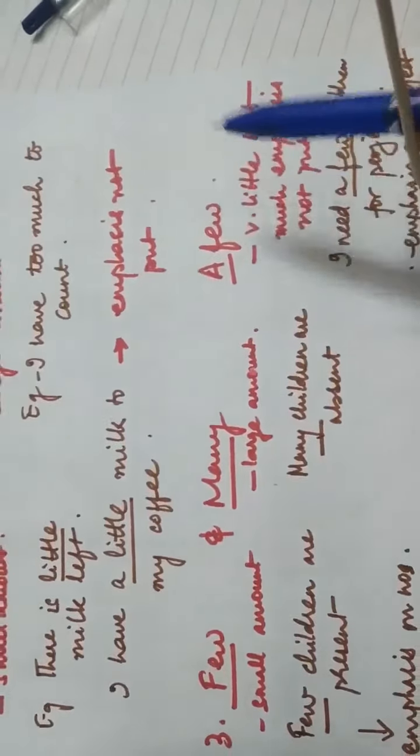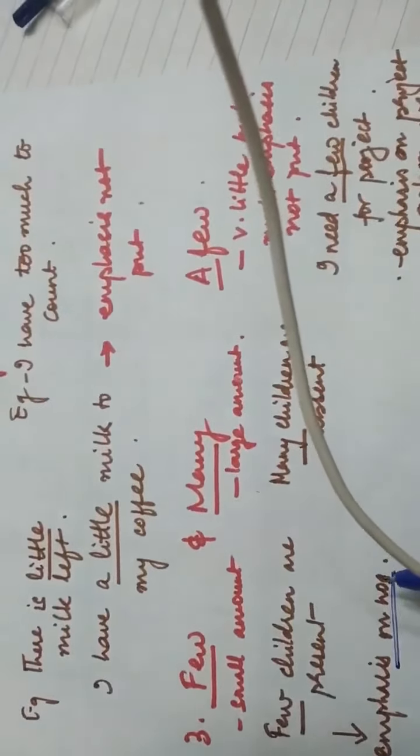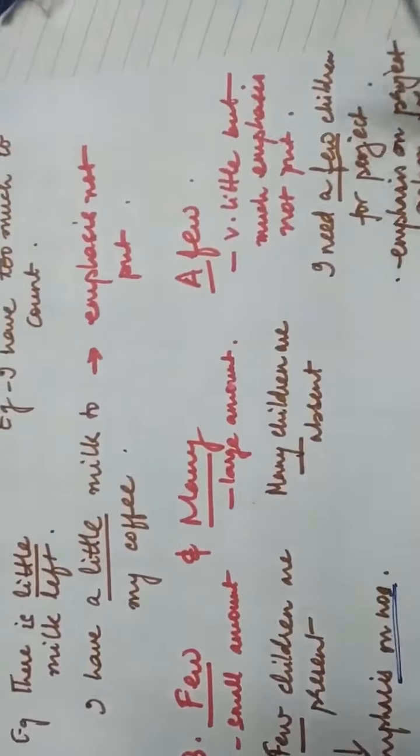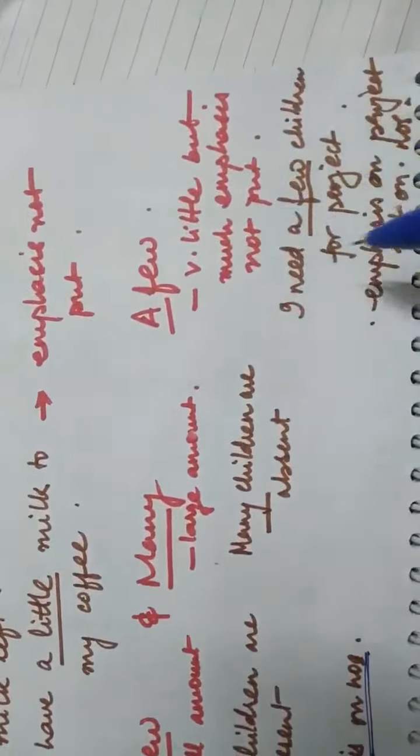The difference between 'few' and 'a few' is this: with 'few', we are emphasizing the number — 'there are few children', so the emphasis is on the number. Whereas when we say 'a few', there is very little emphasis on the number. For example, 'I need a few children for the project' — the emphasis here is not on the number of children, but on the project. So 'a few' is used when we are not emphasizing a particular number.